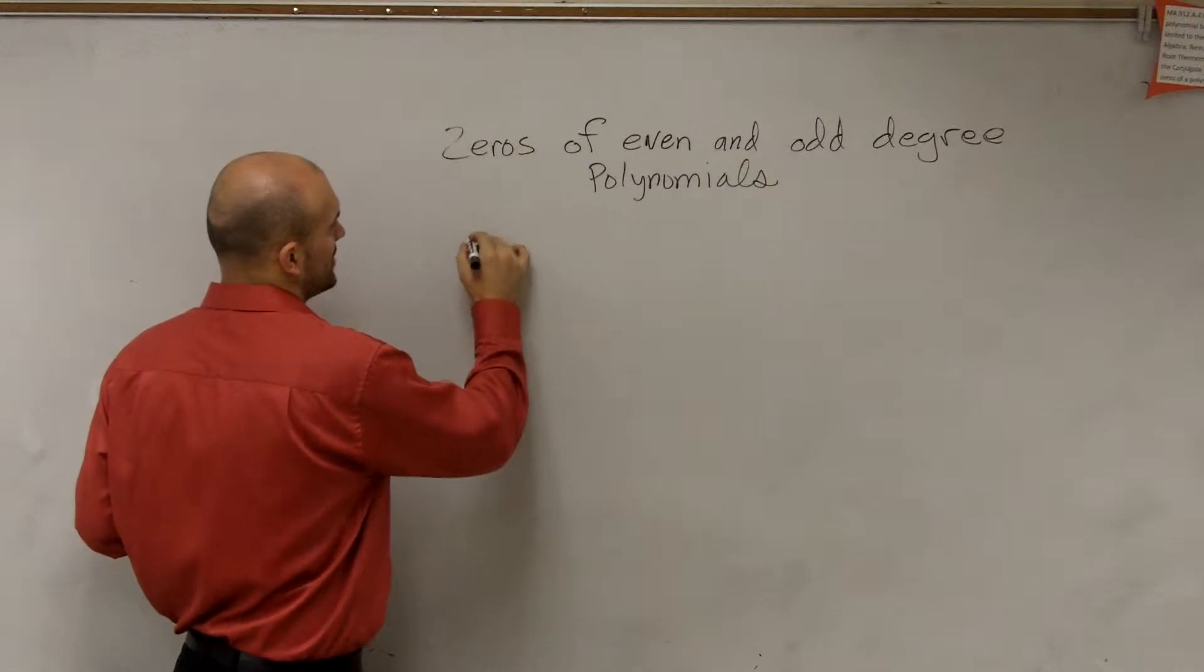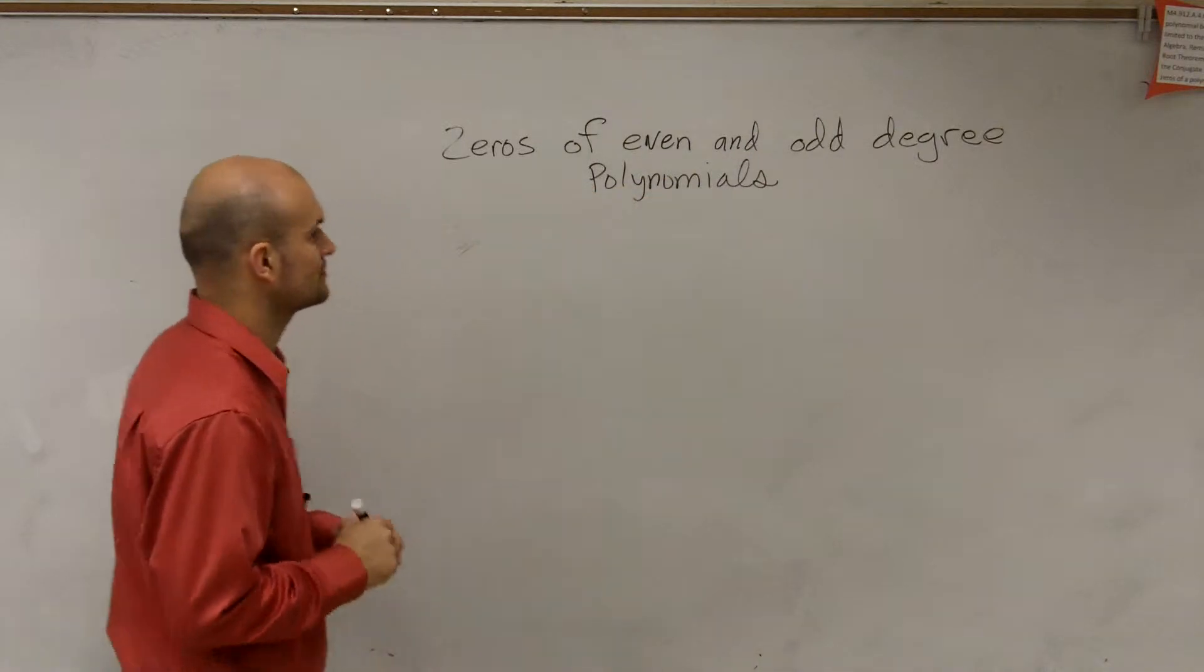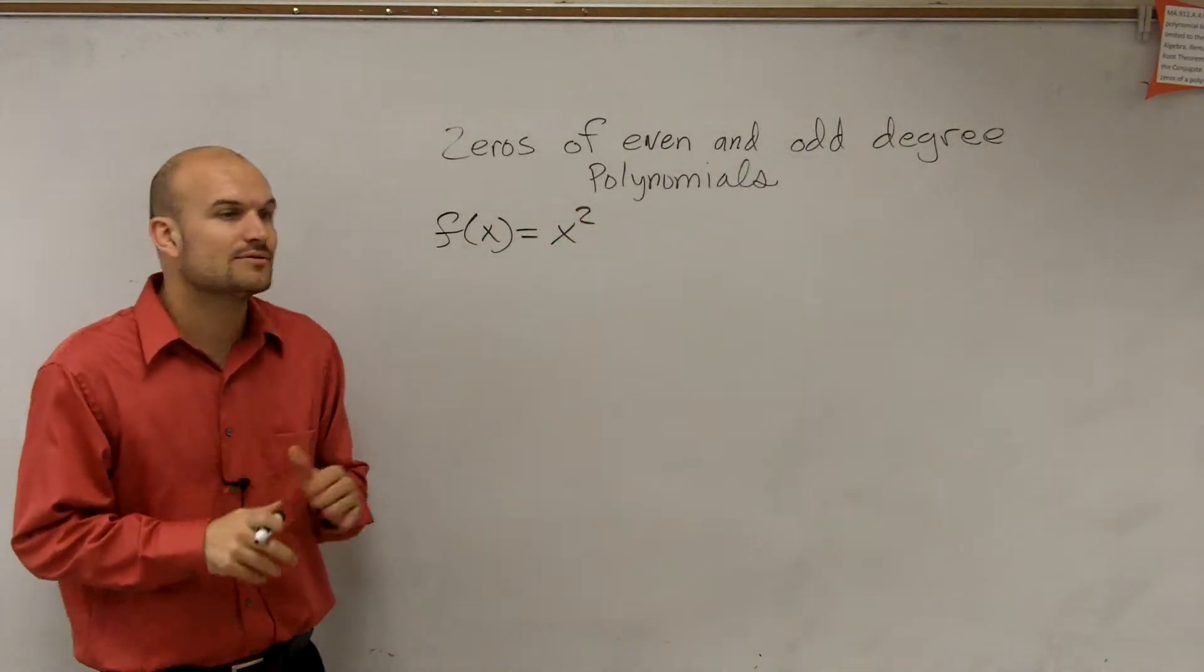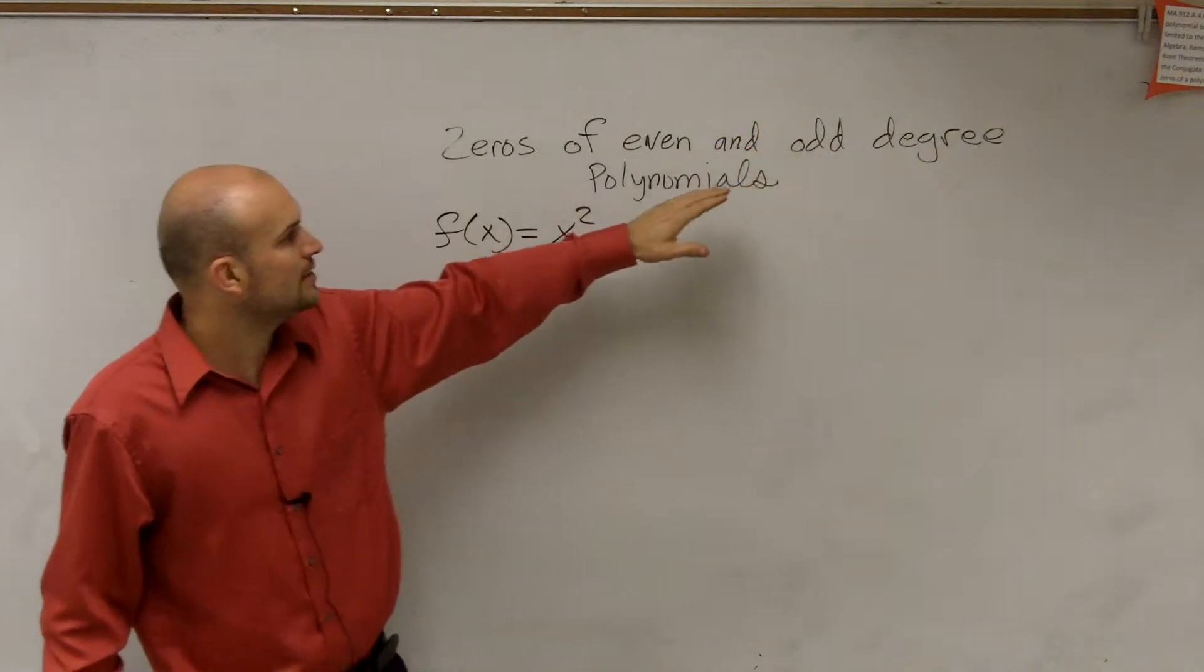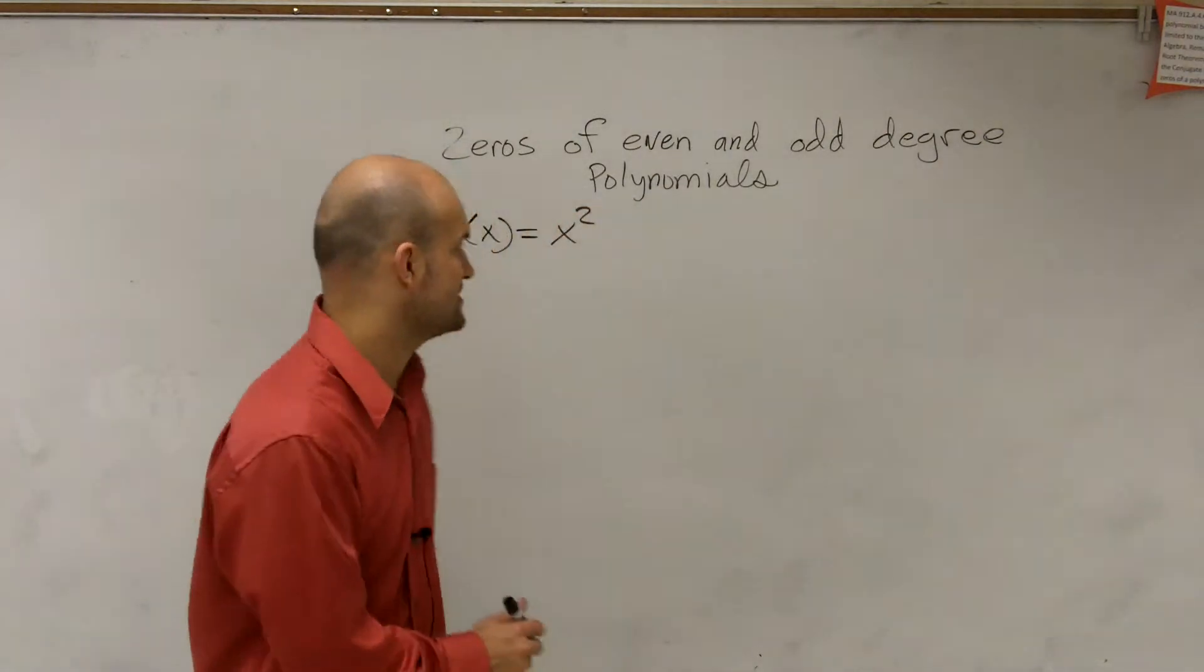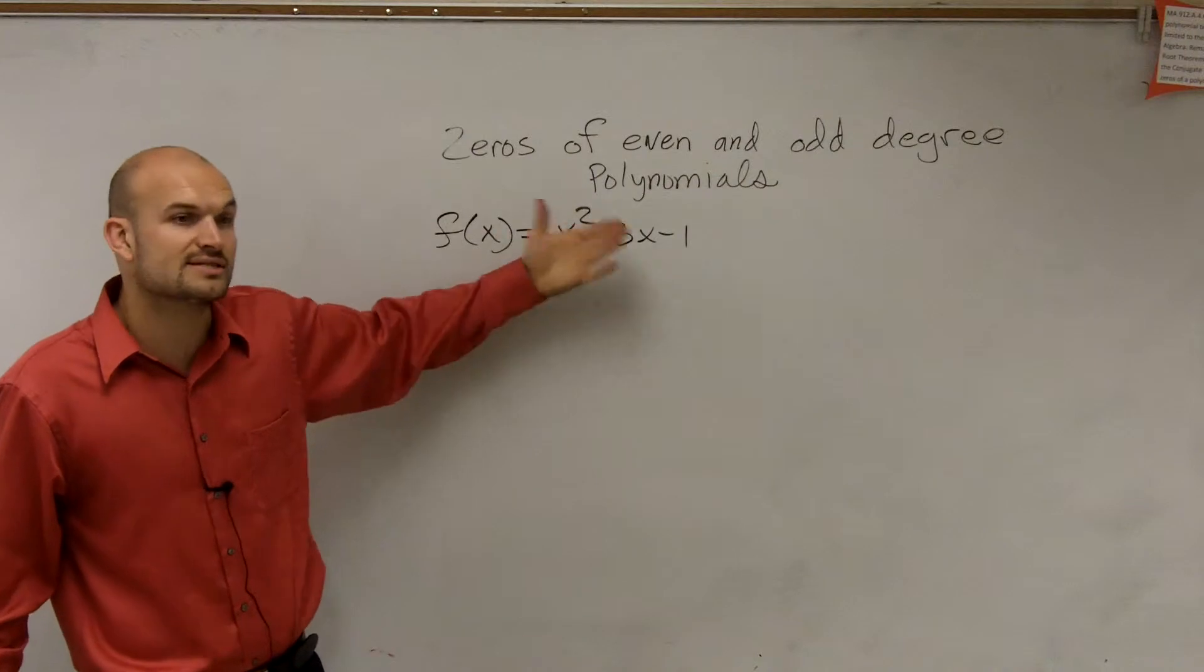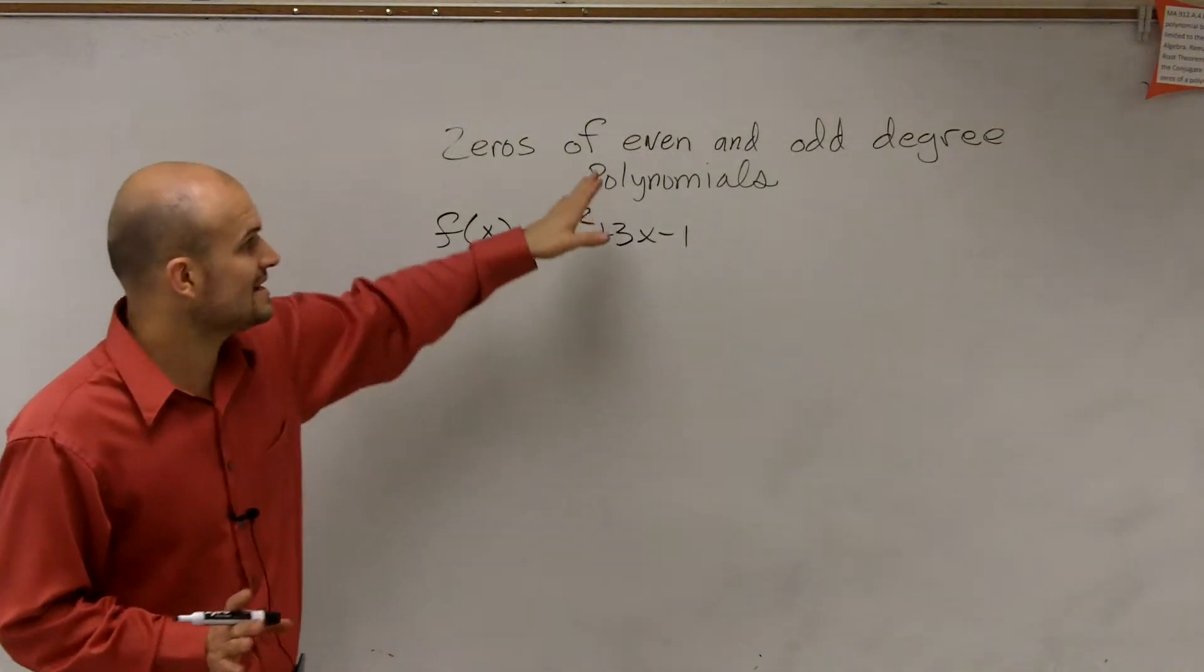So let's look at our first one. All right, so we have f of x equals x squared, right? And when looking at this, there's a couple different ways we could have our solutions. Now, what it says is zeros of even and odd degree polynomials. So this is a polynomial of what degree? Even. Is it still even if I do this? Right, because remember, we look at the largest degree of the polynomial. When it's in descending order, we look at our largest degree and say, all right, that largest degree is still even. So this is an even function.